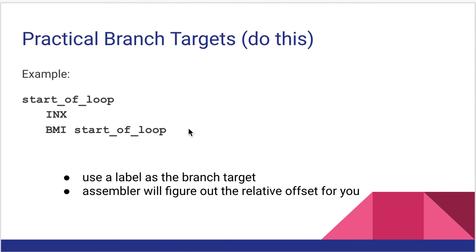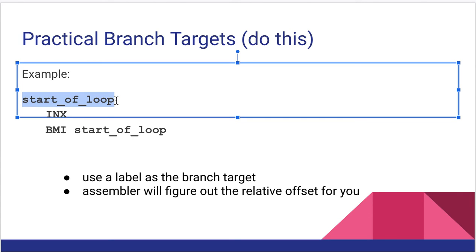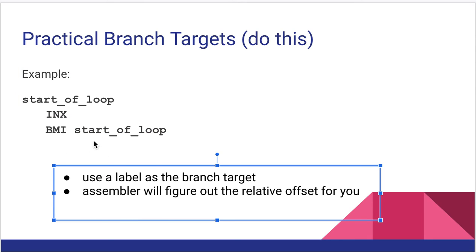Instead, we use labels as our branch targets. So for example I have a label that is start_of_loop. The assembler, when it assembles your code, is going to figure out what that address is. And it's going to do the math so that your conditional branch has an appropriate offset to get to that label. In other words, you don't have to worry about all this. Just use labels as your branch targets and everything will be good. And it will do that whether the branch is forward or backwards.